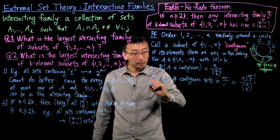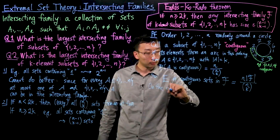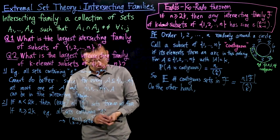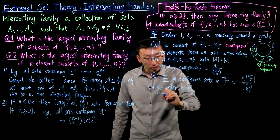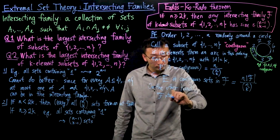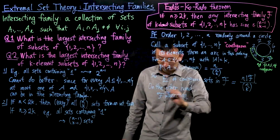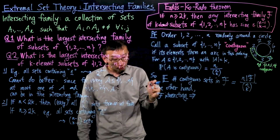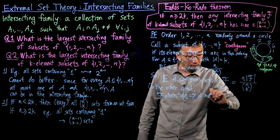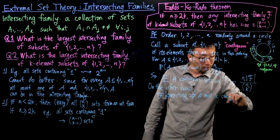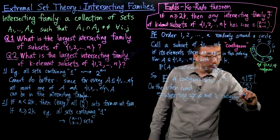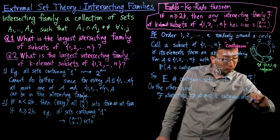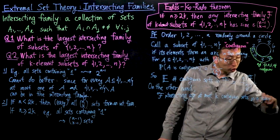On the other hand, the property of F being intersecting implies that in any given circular ordering there are at most K contiguous sets from F.